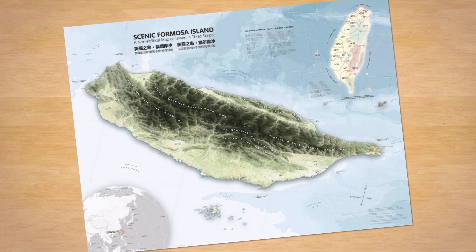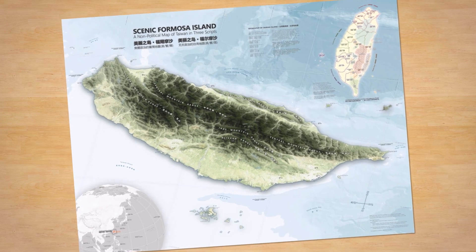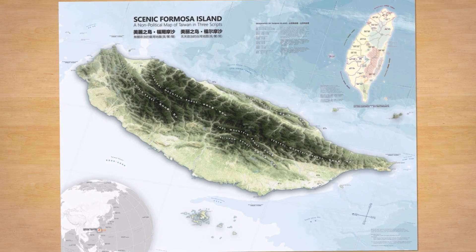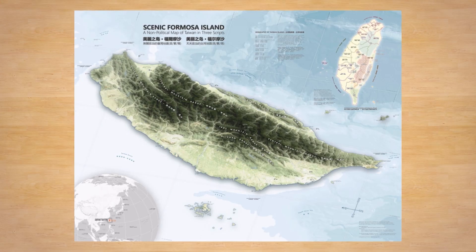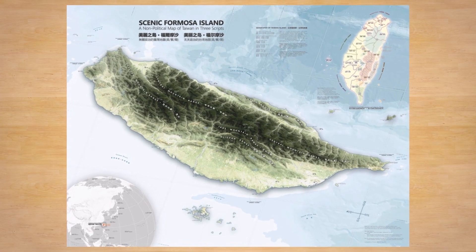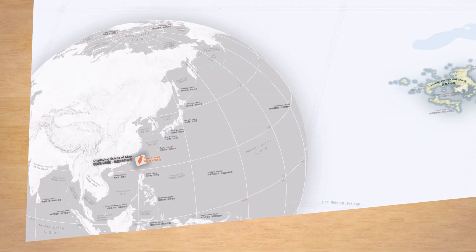This map by Atlas Guo is an object of joy — Scenic Formosa Island, a non-political map of Taiwan in three scripts: English, traditional Chinese characters, and simplified Chinese characters. Atlas continues this theme of three by balancing his diagonal composition with three main map elements.